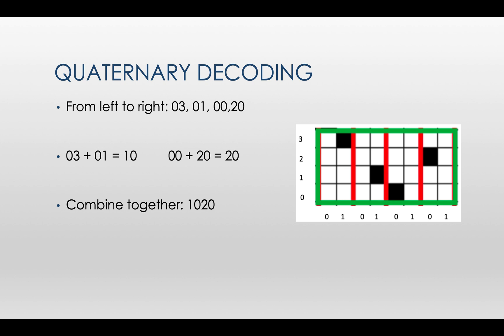0, 3 and 0, 1 equals 1, 0 in the quaternary system. And 0, 0 and 2, 0 equals 2, 0. Combine the two quaternary numbers and we have the number 1, 0, 2, 0.